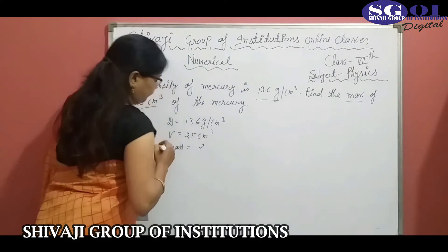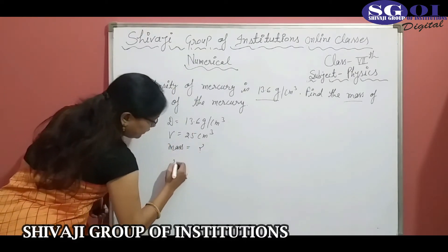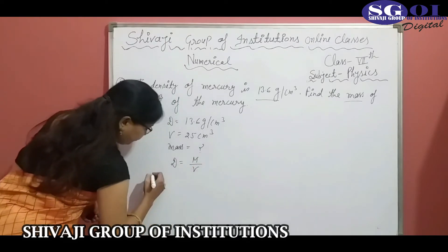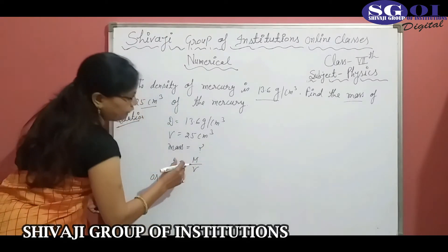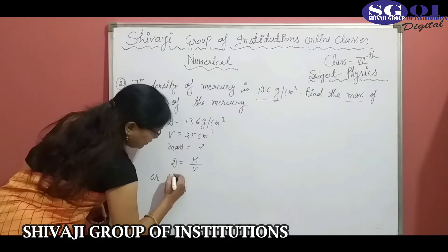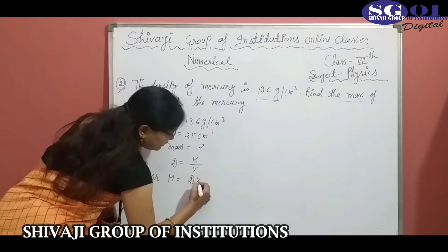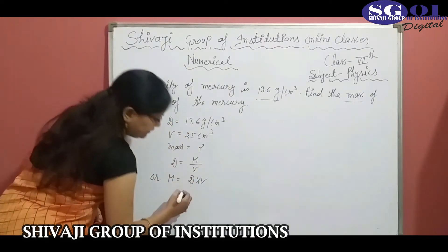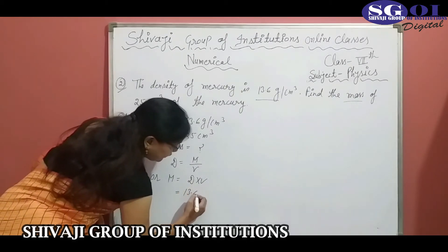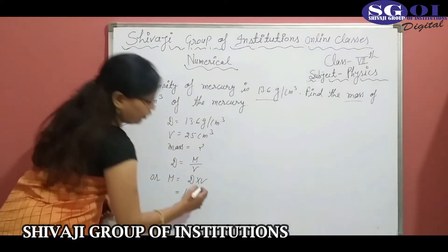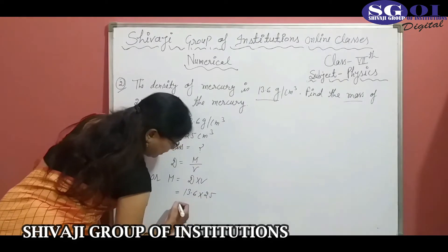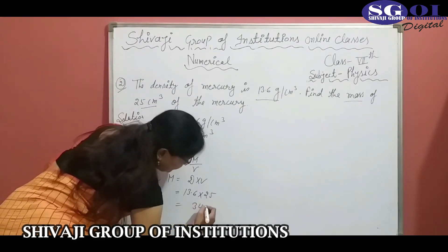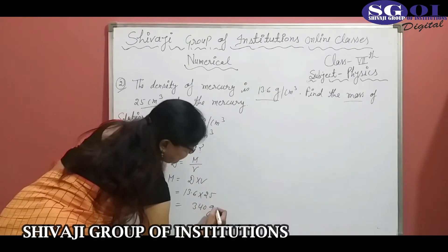The formula of density is equal to mass divided by volume, and the formula of mass is equal to density into volume. Here, density is 13.6 and volume is 25 cm³. After multiplying, we get 340 gram.